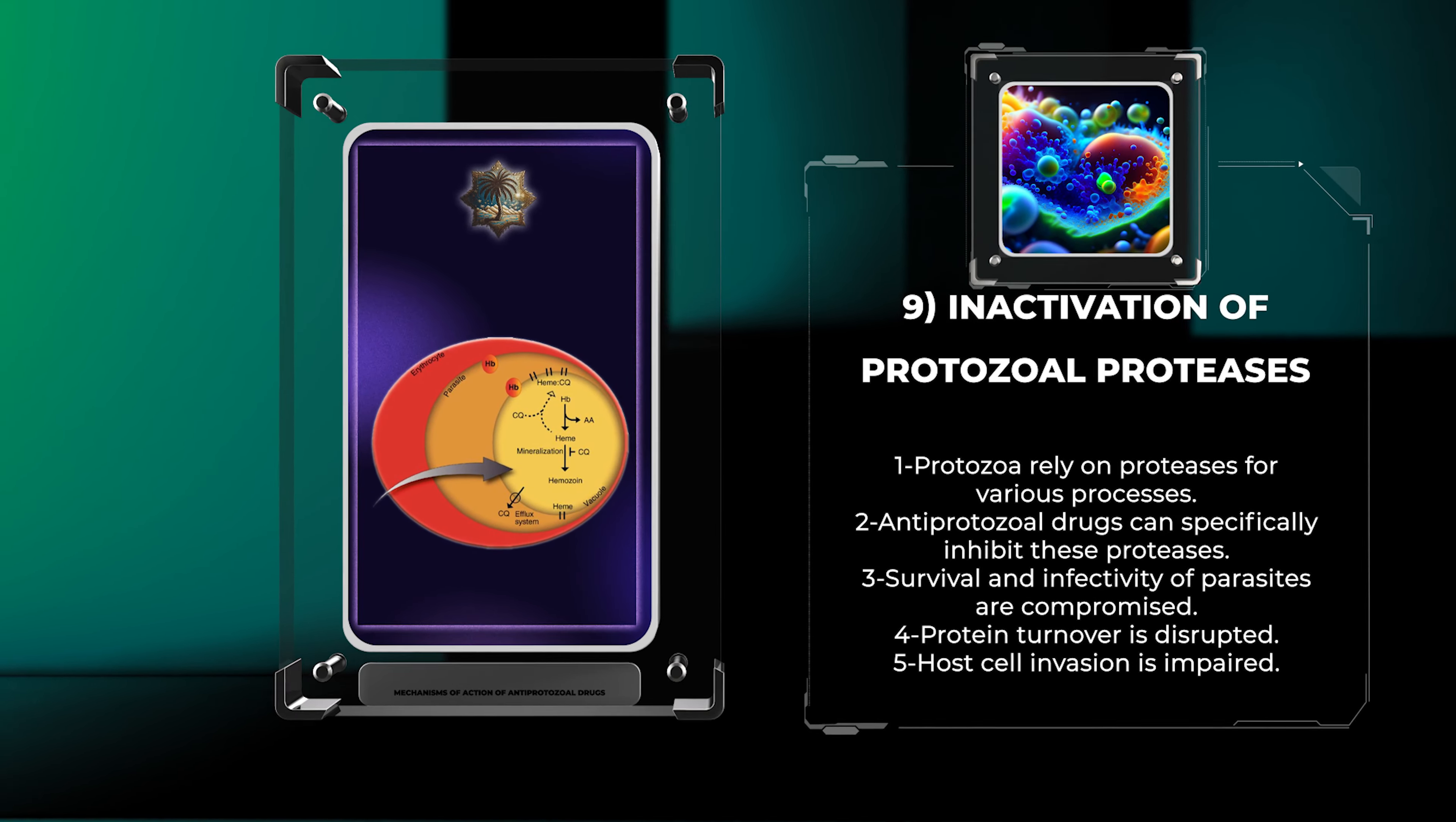Cell signaling pathways orchestrate critical physiological processes in protozoa, including growth, development, and evasion of host immune responses. Antiprotozoal drugs can modify these signaling cascades by targeting specific receptors or downstream effectors. This modulation disrupts the signaling networks, compromising essential protozoal processes and rendering them vulnerable to host immune defenses or other drug interventions.